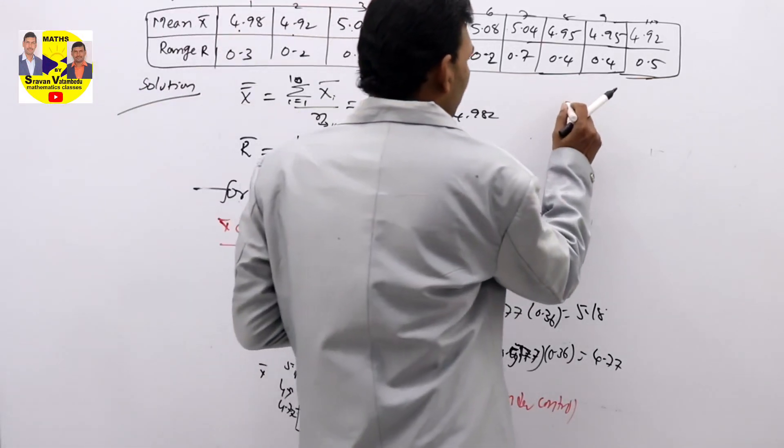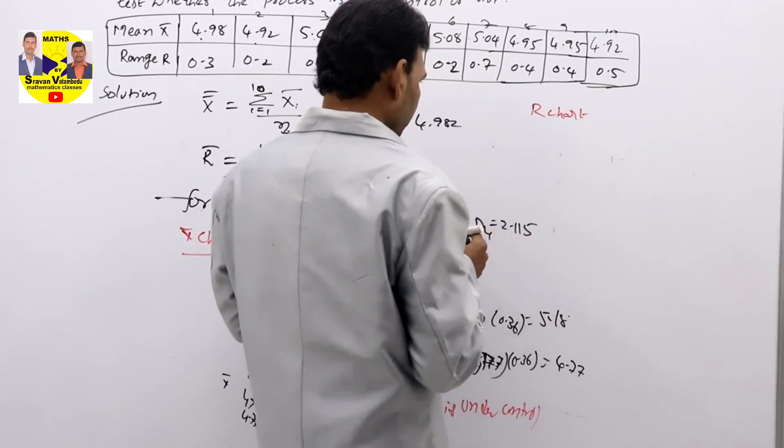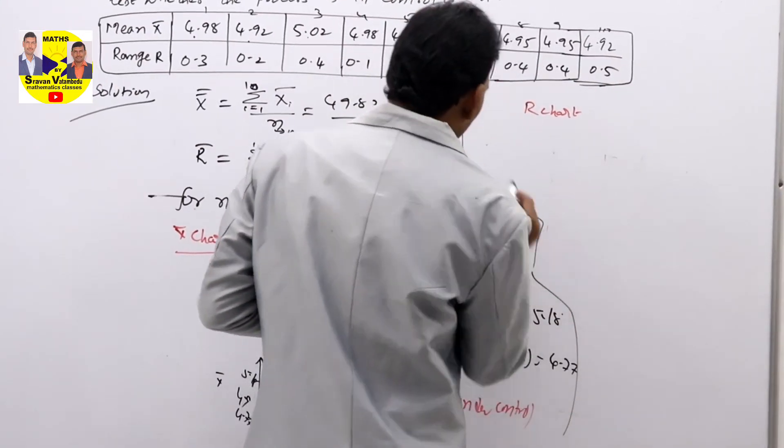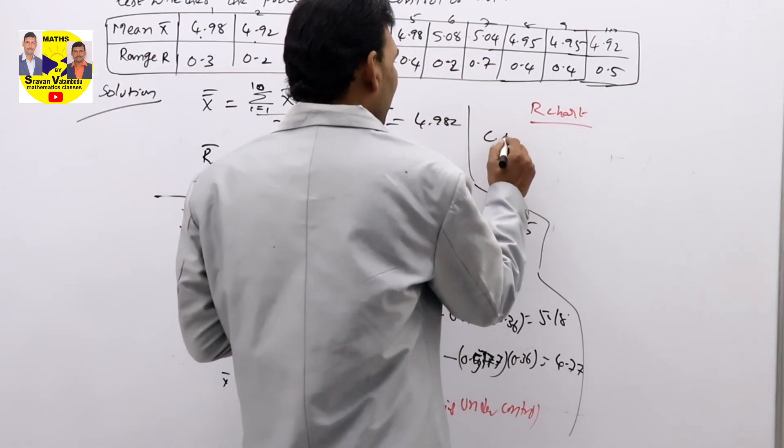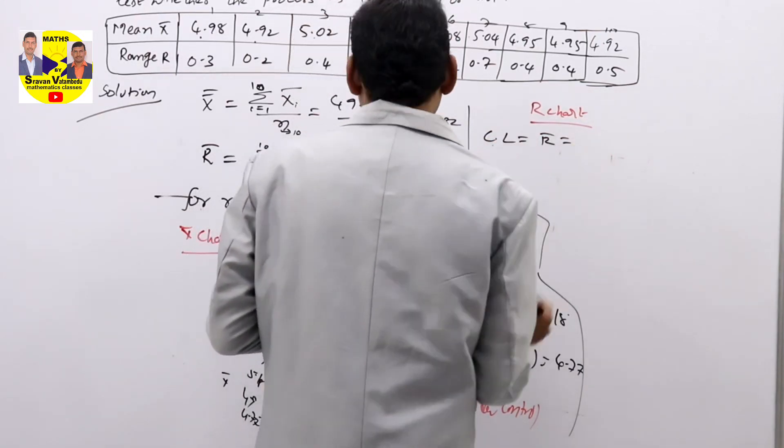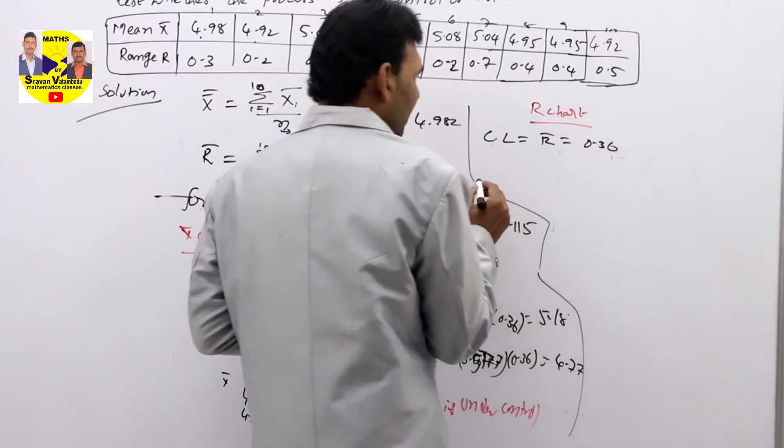Coming to next chart: R chart, range chart. In range chart, we all know that CL is R bar only. That R bar value we calculated: 0.36.